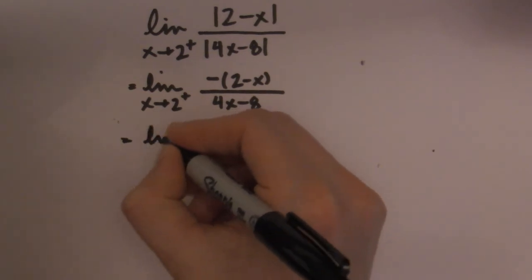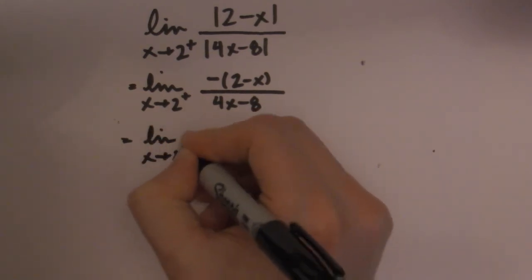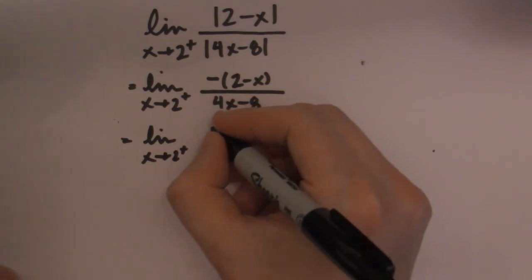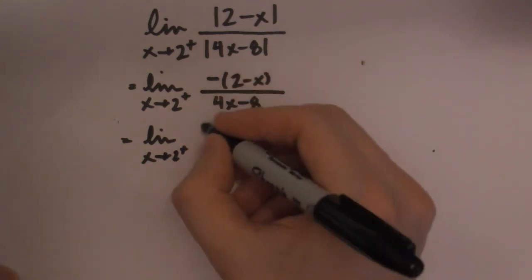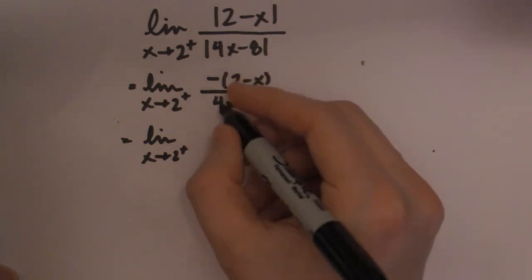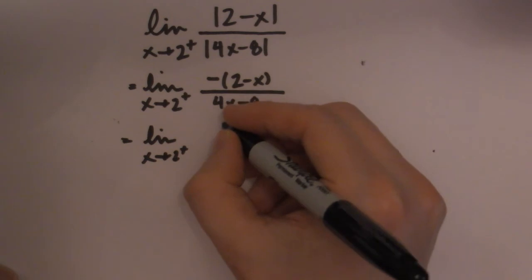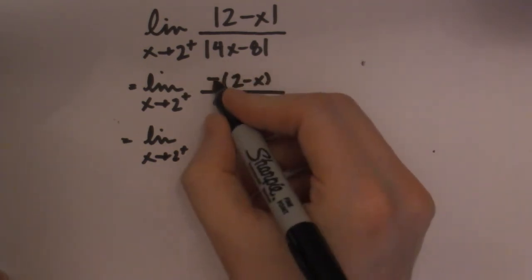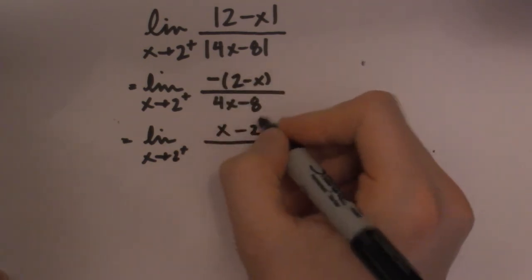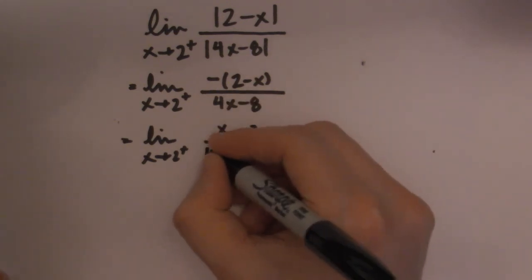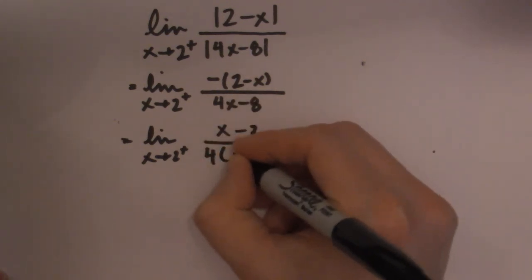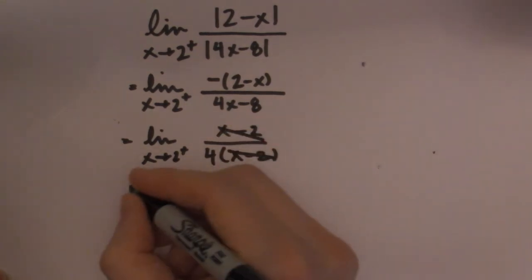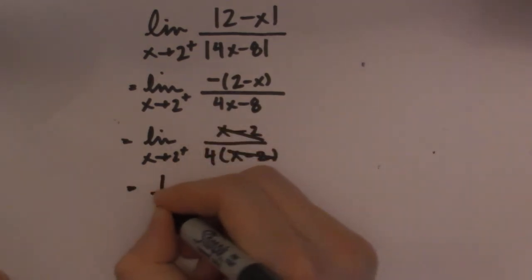So now we can solve this one the same way. I take a negative out of negative 2 minus x — negative and a negative becomes plus — so I'm left with x minus 2. Then I take the 4 out, leaving x minus 2 in the denominator. Cancel those terms, and I'm left with 1 over 4.